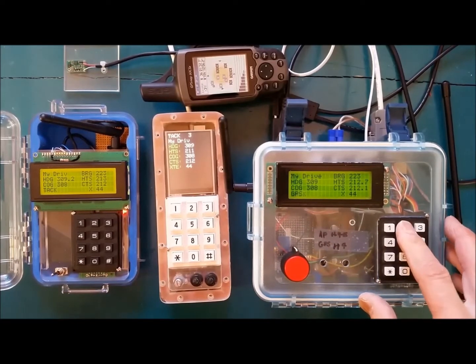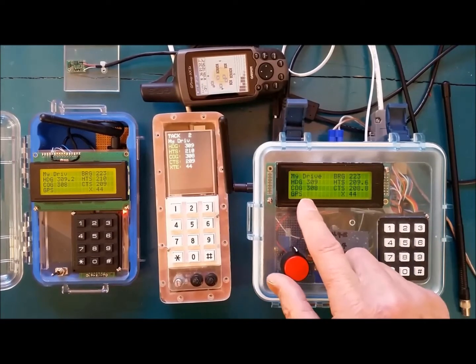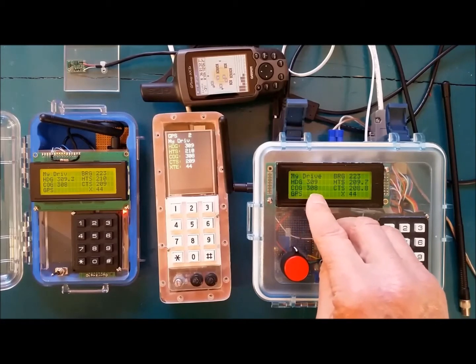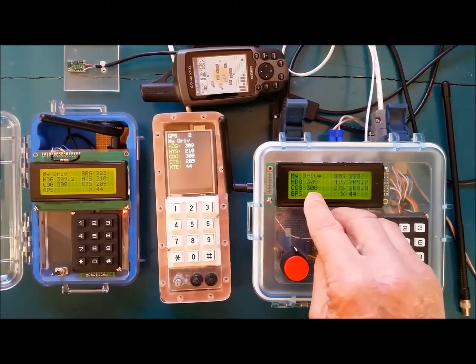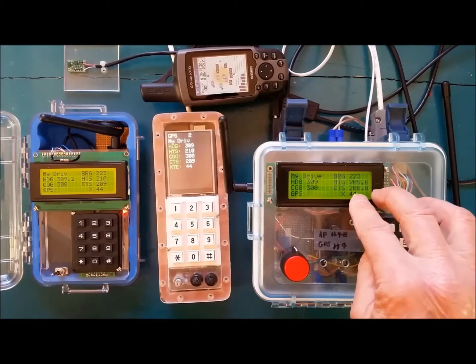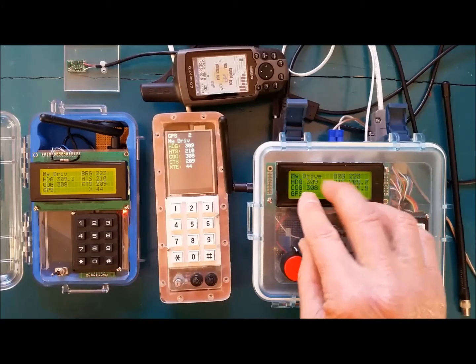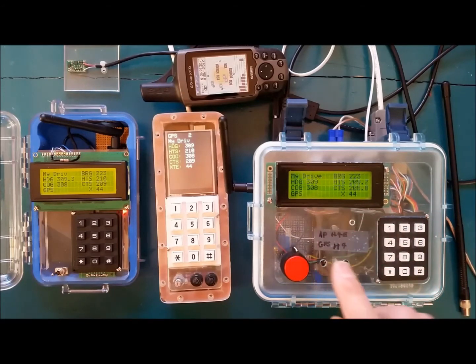So let's look at the GPS mode now. In GPS mode, we capture this bearing. Actually, it's the course over ground and the course to steer. This course to steer will get us back on course and get us to this waypoint in the GPS mode.